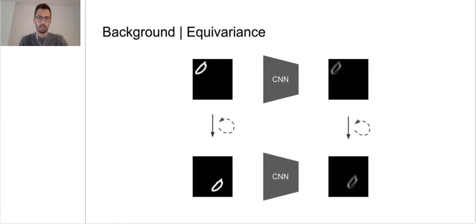In other words, translating the input image and then running a CNN on it leads to the same results as first running the CNN on it and then translating the output. This is a strong inductive bias that makes CNNs very data-efficient because learning from a single example implies generalization to all its possible translations.